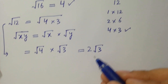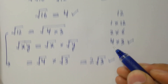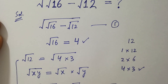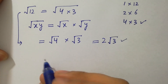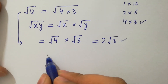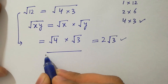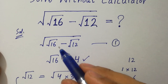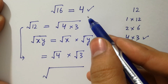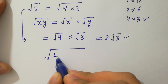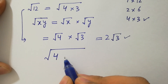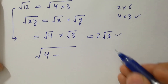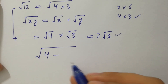Now substitute back into the first equation. It becomes the whole square root of: square root of 16 is 4, minus square root of 12 which is 2·√3.